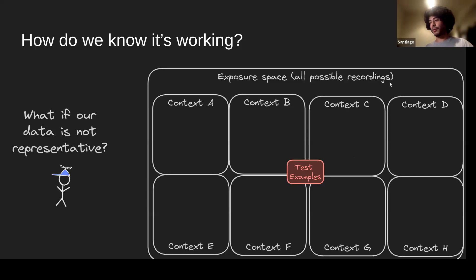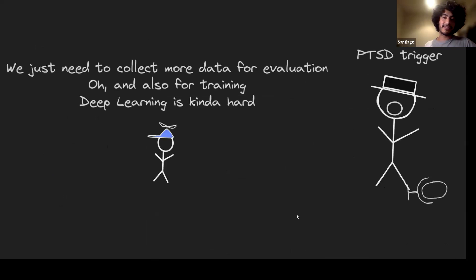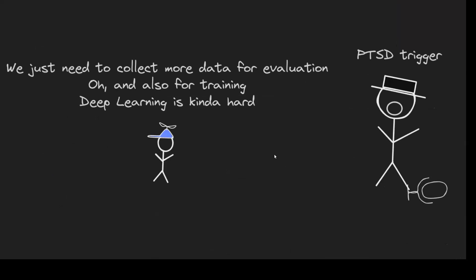What does this mean for evaluation? What if our test data isn't representative? Our exposure space — all possible recordings we want to use our methods on — can be broken down into multiple contexts, and our test examples may only cover a few of them. Our evaluation won't tell us anything about performance in those other contexts. The solution is to go out and collect more data.